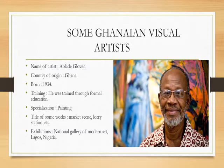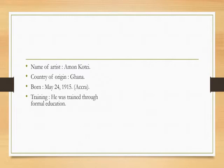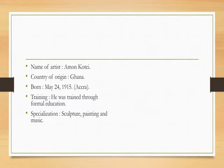The next person to talk about is Amon Kotei. I hope the name sounds familiar. He was once a student like you. His area of specialization is sculpture, painting, and music. He does sculptural works, he can paint, and he can also compose music.